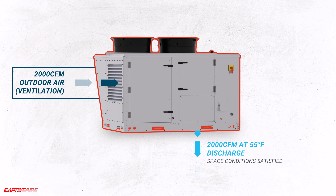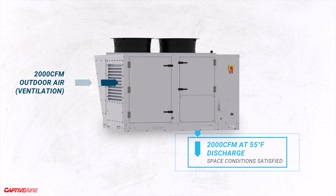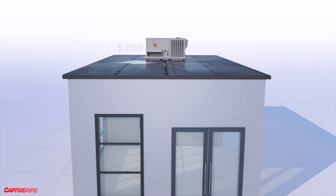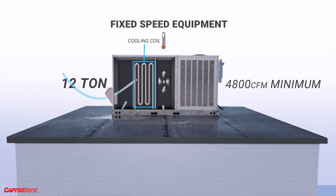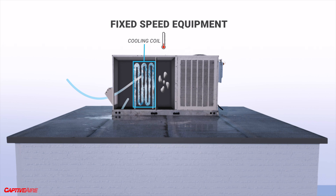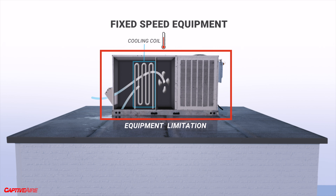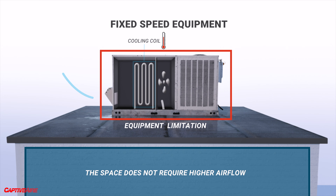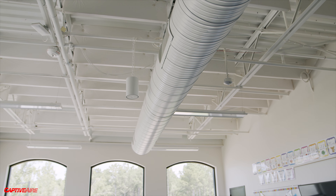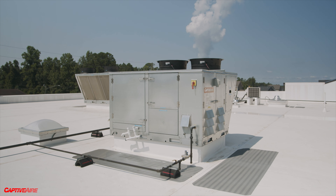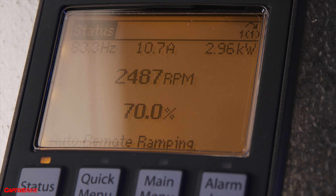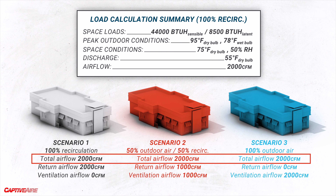As long as equipment is sized correctly to deliver 2,000 CFM at 55 degrees for each application, space conditions will be satisfied regardless of where that air came from. Each scenario will require a different size unit, but this shows that regardless of ventilation's impact on equipment, the total airflow requirement to maintain space comfort stays the same. The reason many systems increase supply CFM when adding ventilation load is that fixed-speed equipment requires a certain CFM per ton across the cooling coil — running lower CFM while increasing cooling capacity drives coil temperature down and risks freezing the coil over. That's an equipment limitation, not a space requirement.